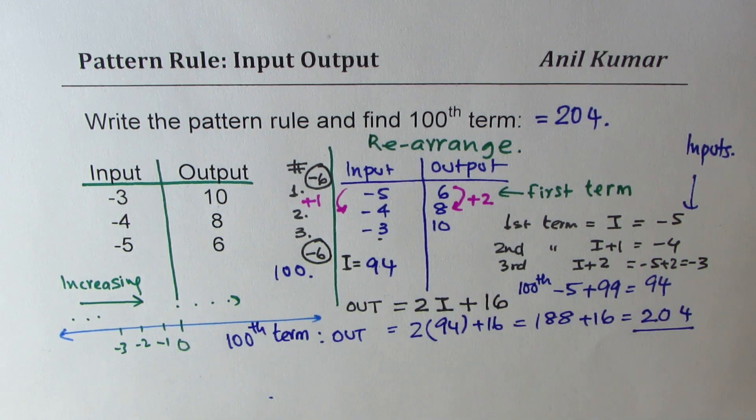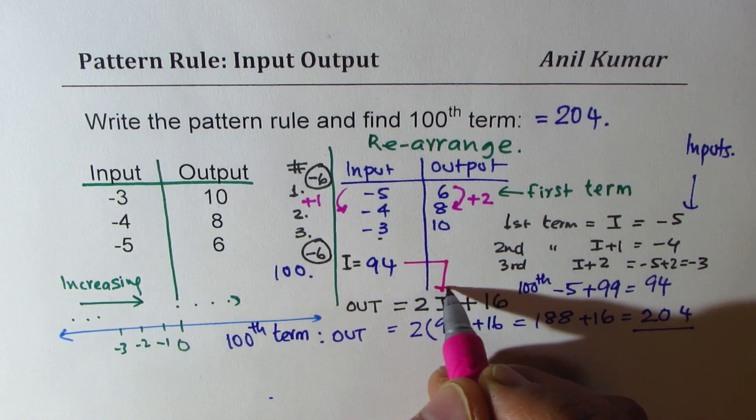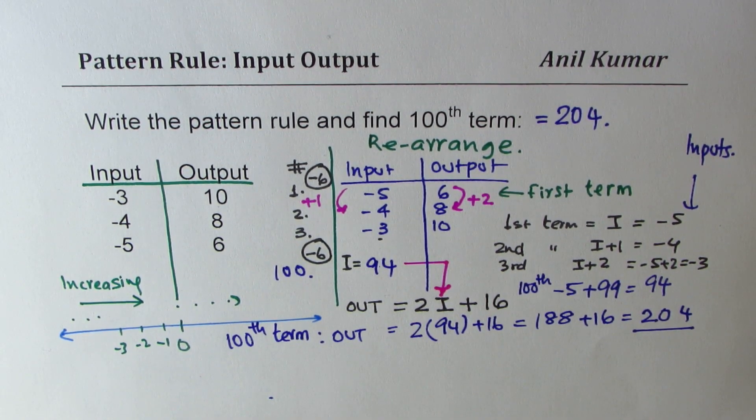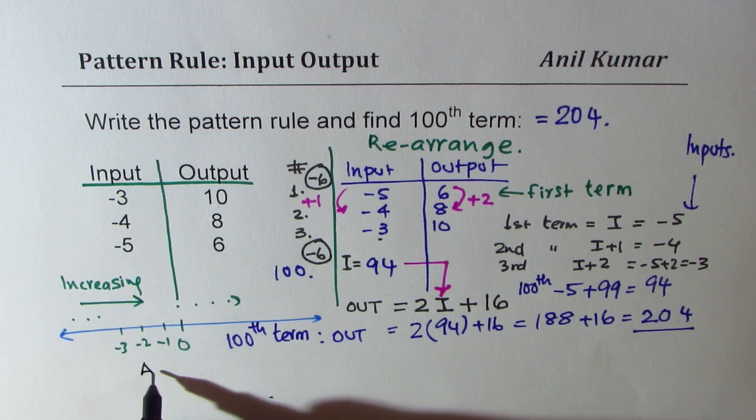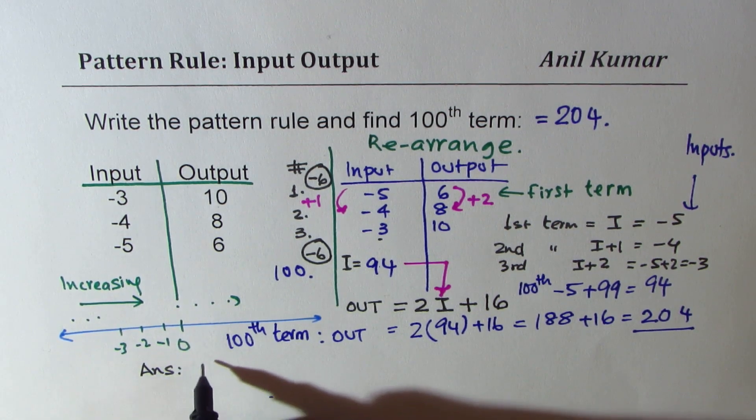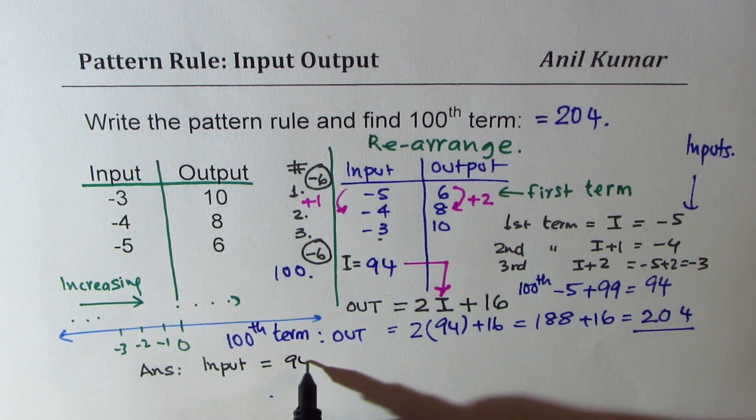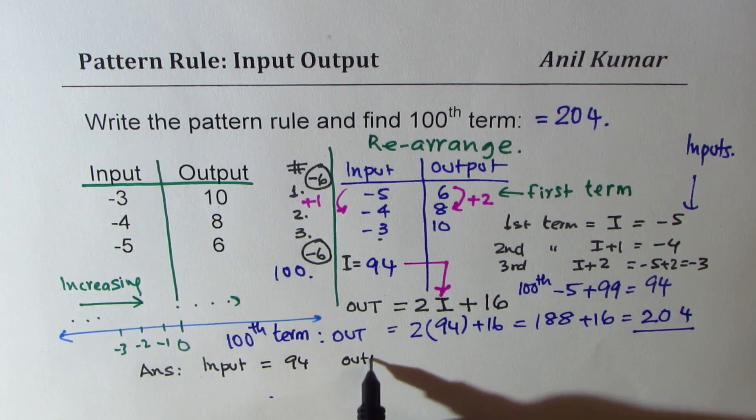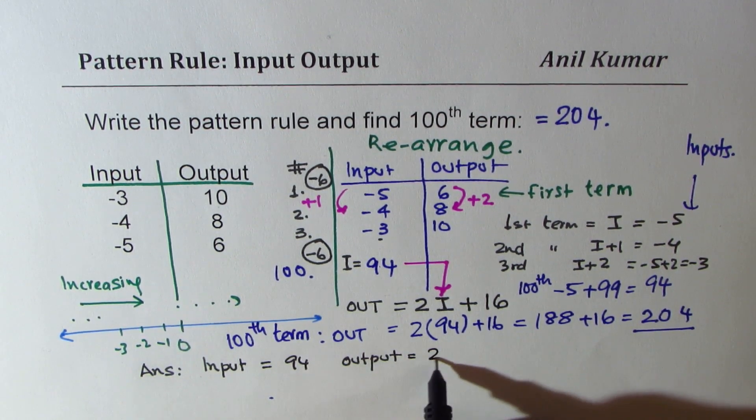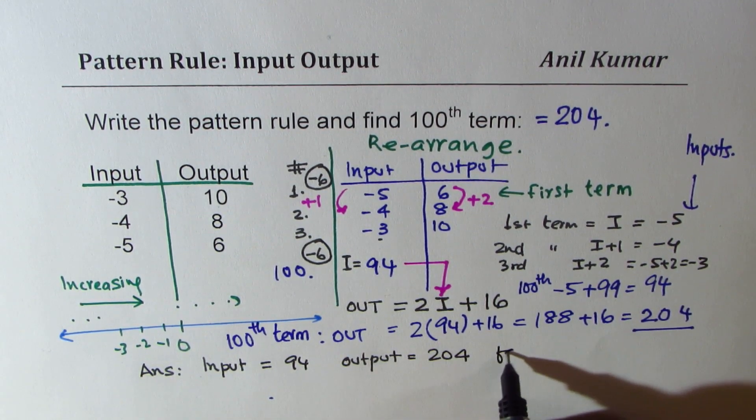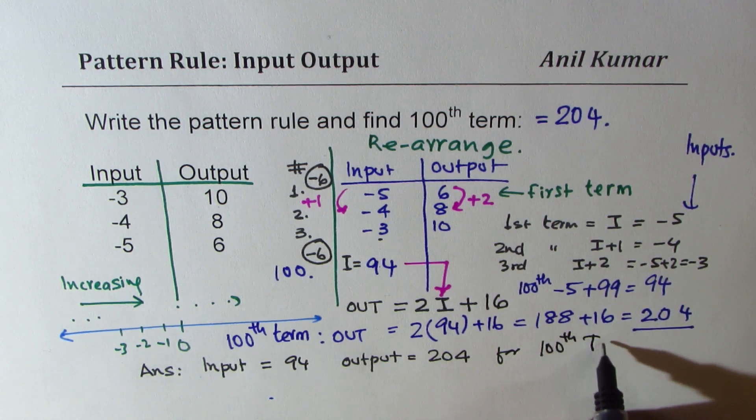So in our formula, we have to use this value 94 for I. So I hope now the concept is absolutely clear. Then you get that answer. So that is why this question is so beautiful and so important. So our answer here is I equal to 94 and output equals to 204 for hundredth term.